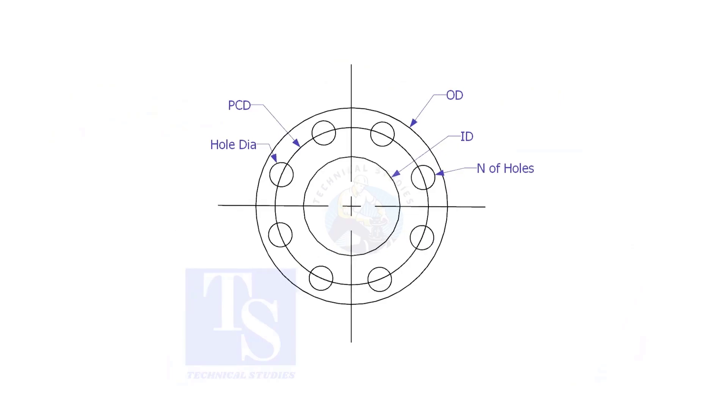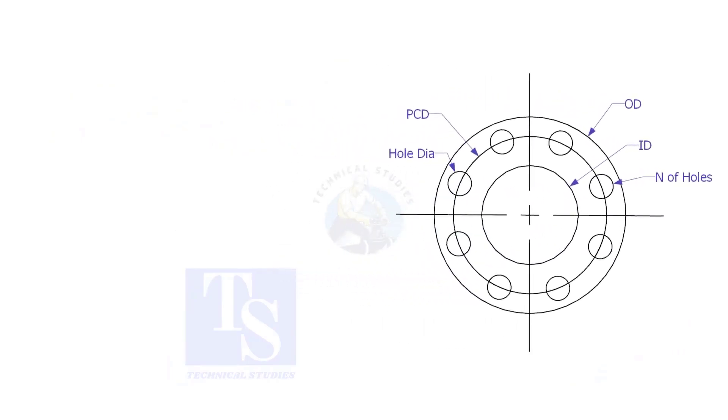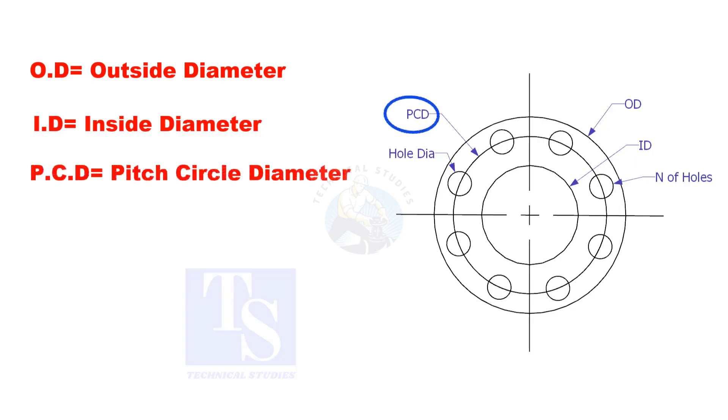To make a plate flange, we need to know the following things: OD, the outside diameter. ID, the inside diameter. PCD, the pitch circle diameter. Number of holes. And the hole size.